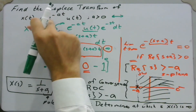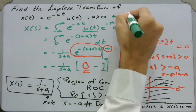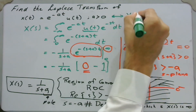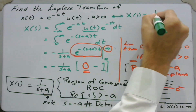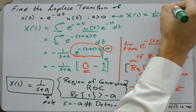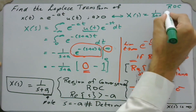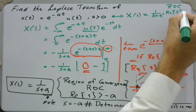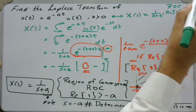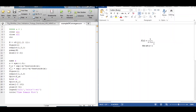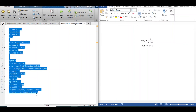In summary, for x(t) = e^(-at) u(t) with a > 0, the Laplace transform X(s) is simply 1/(s+a), and the region of convergence is Re(s) > minus a. So we have this function in the Laplace domain — X(s) = 1/(s+a) — and minus a is the pole.